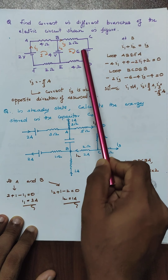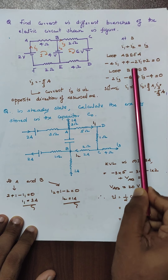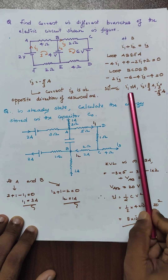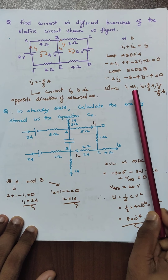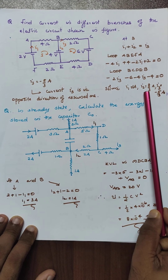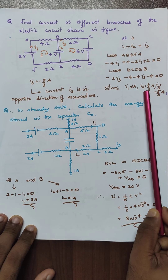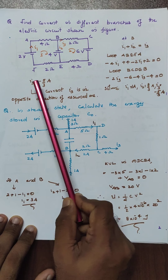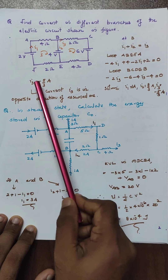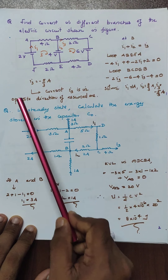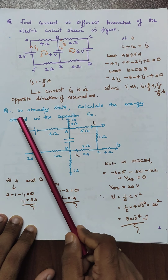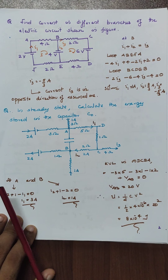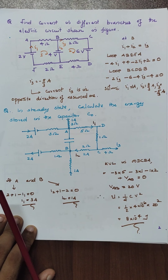Similarly, applying this loop and solving, you get: I1 equal to 1 A, I2 equal to 8/3 A, and I3 equal to minus 5/3 A. The meaning of the negative sign is that the current is opposite to the assumed direction. That is a very important concept.